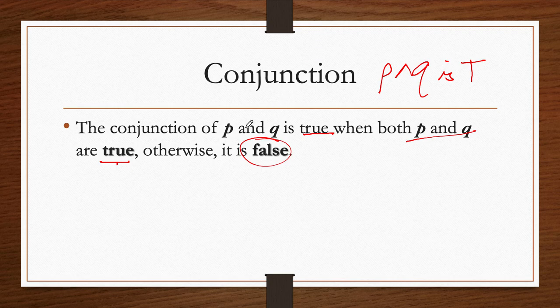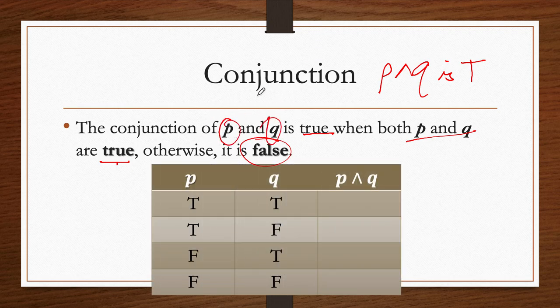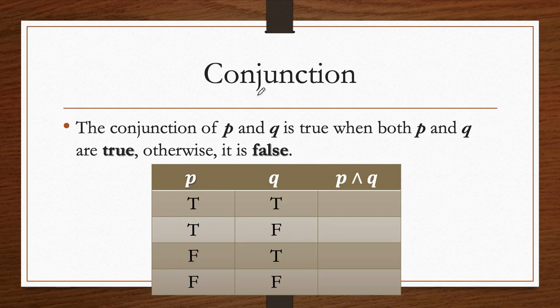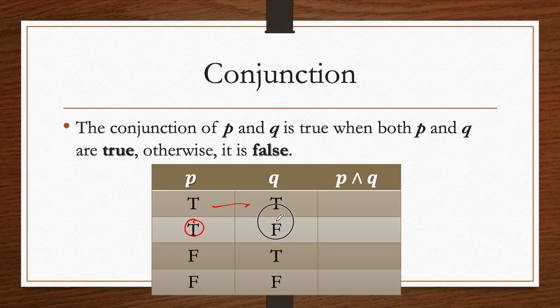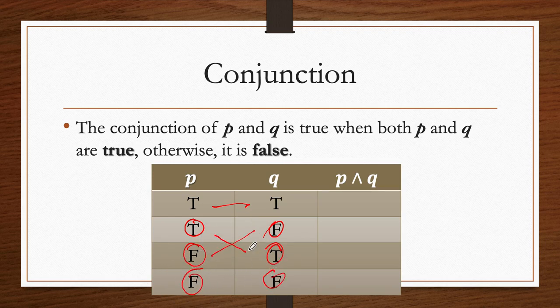Since we're dealing with two propositions, P and Q, we need a longer truth table because we have a combination of truth values. Both can be true, the first true and second false, the first false and second true, or both false.